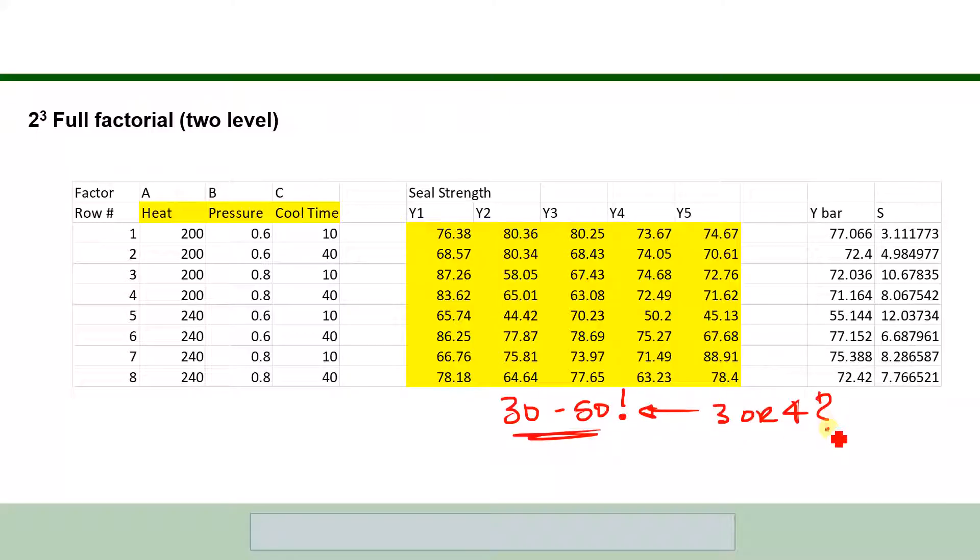Very efficient because with 30 to 50 we can test in this case three variables, but you could have tested up to 11 variables with the same sample size. The three variables they played with are the heat, the pressure, and the cooling time. Heat from 200 to 240, pressure 0.6 to 0.8, and cooling time between each pouch 10 seconds to 40 seconds.